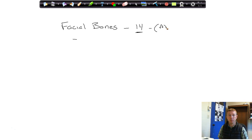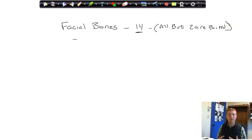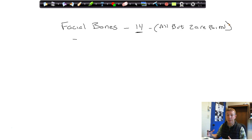All but two of them are paired. What that means is that most of the bones of our face, if there's one on the right, there's one on the left. So you don't have to know 14 different names — we need to know significantly less than that.